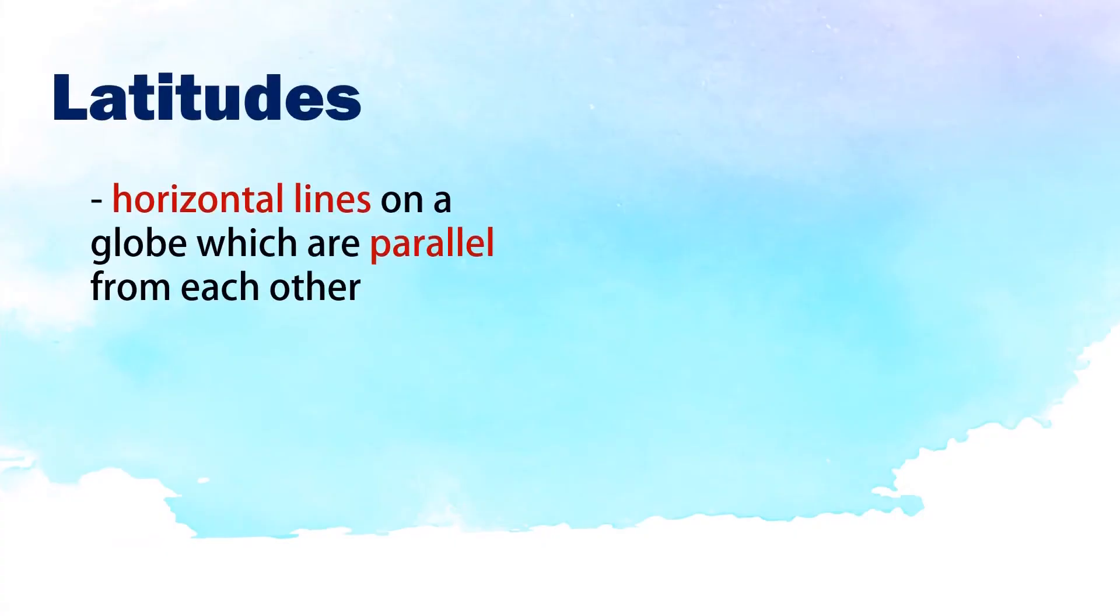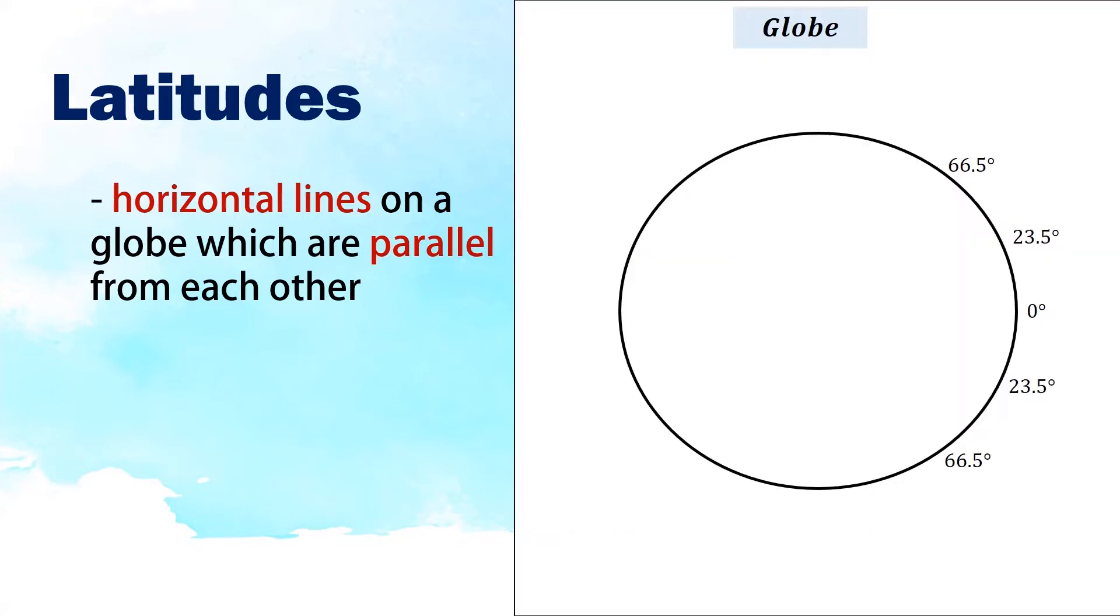Latitudes are horizontal lines on a globe which are parallel from each other. For example, in this illustration of the globe, the horizontal lines which are parallel from each other are the latitudes.